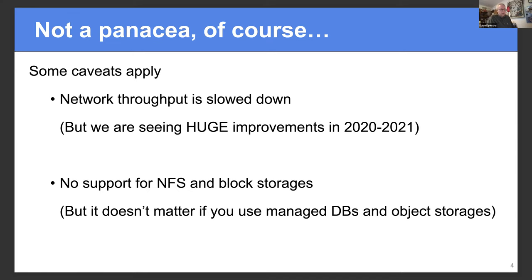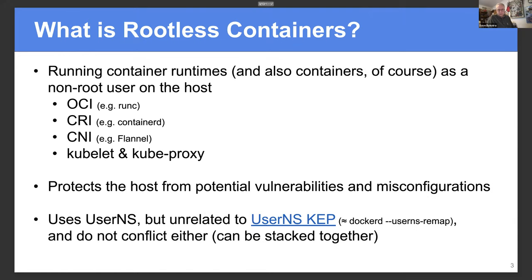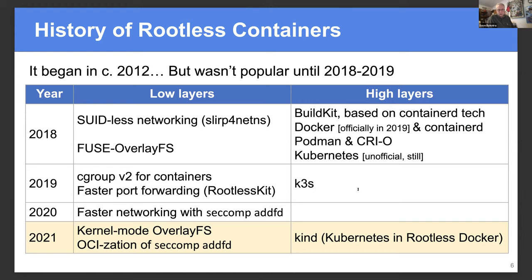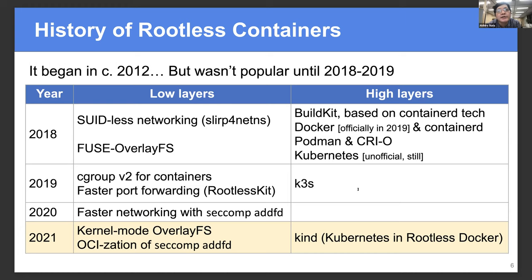I have a question - is there any update on kernel support of overlayFS from user namespaces? I know they've talked about that for a long time. I know there's fuse-overlayfs, but what about kernel mode overlayFS? Yeah, so there are two implementations of overlayFS - one in kernel mode and one in user space like fuse-overlayfs. Kernel mode overlayFS didn't support rootless until kernel 5.11, but it's already in 5.11? Oh yeah, 5.11 was released last month I think. So that could be a good improvement in performance, hopefully over fuse-overlayfs.